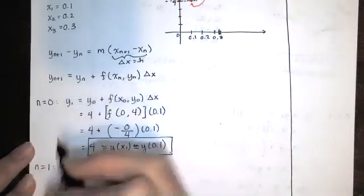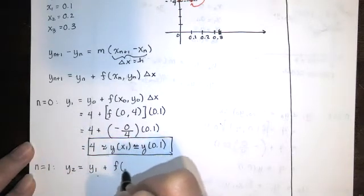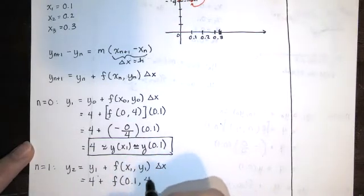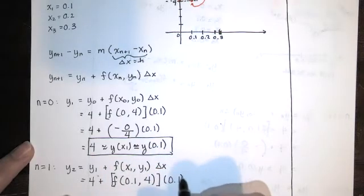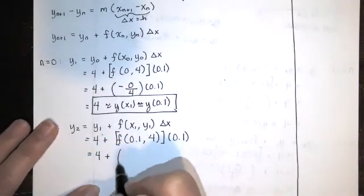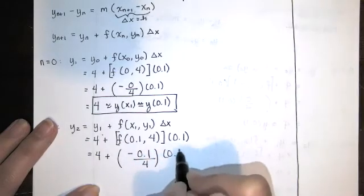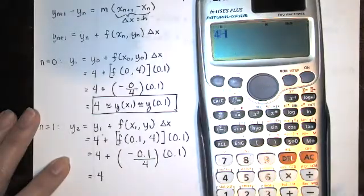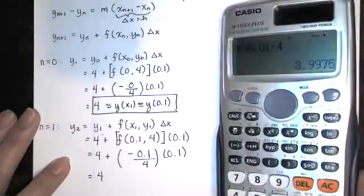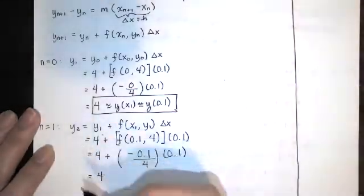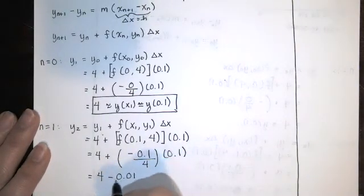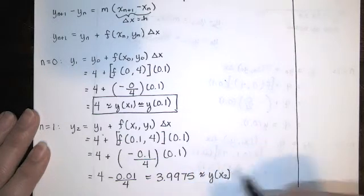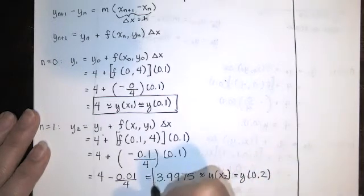For n equals 1: y sub 2 equals y sub 1 plus f(x_1, y_1) times delta x. y sub 1 is 4 and x sub 1 is 0.1. The slope is negative 0.1 over 4, so we have 4 plus (negative 0.1 over 4) times 0.1, which equals 4 minus 0.01 divided by 4, giving y(0.2) approximately equals 3.9975.